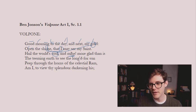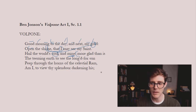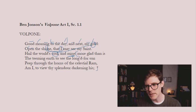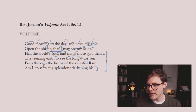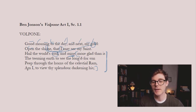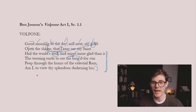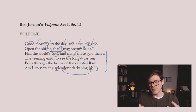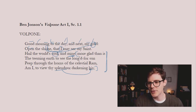Now notice this syntactically — think about where the subject is in this sentence: 'More gold than is the teeming earth to see the longed-for sun peep through the horns of the celestial ram, am I? To view thy splendor darkening his.' This is complicated poetic diction, which is partly what Donne is reacting against. If you translate this into prose, he's saying: I am more glad to see my gold than the teeming earth is to see the longed-for sun. And the splendor of the gold darkens the sun's. It's not the way you'd naturally speak in conversation.